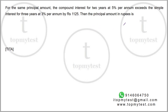This is a question from CAT 2020 Slot 2 on interest calculations — not difficult at all, some amount of calculation and your job is done. I would suggest pausing this video, trying to solve this question on your own, and then proceeding with the rest of the solution. This one says: for the same principal amount, the compound interest for two years at five percent per annum exceeds the simple interest for three years at three percent per annum by rupees 1125. What is the principal amount in rupees?